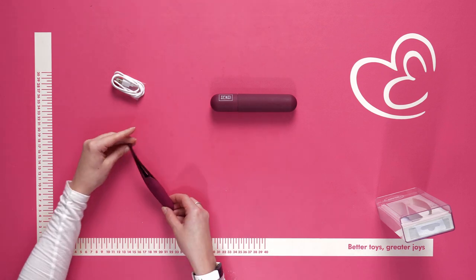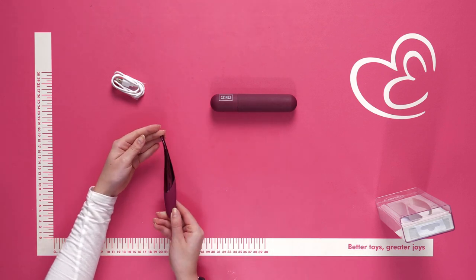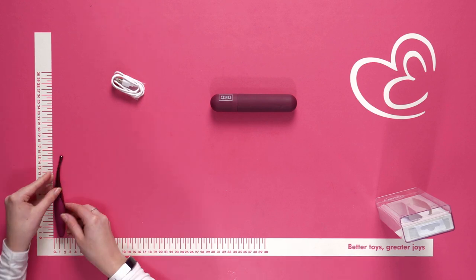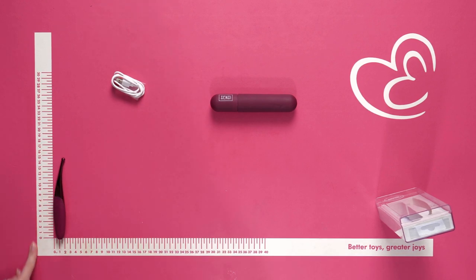This is the Sensi vibrator itself. It's shown here in the color Deep Red, but it's also available in various different colors as well.